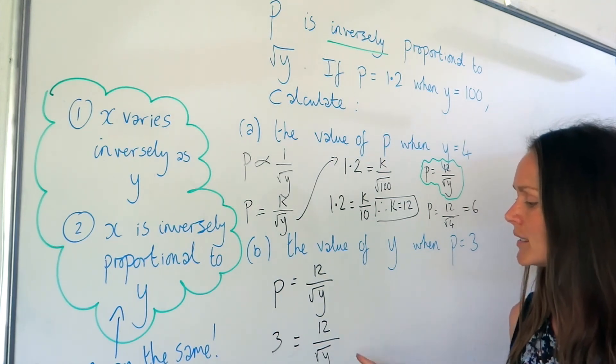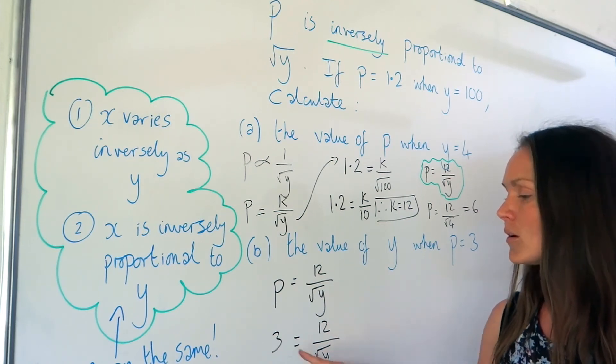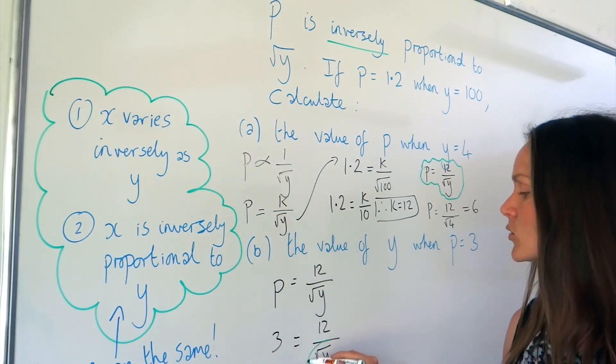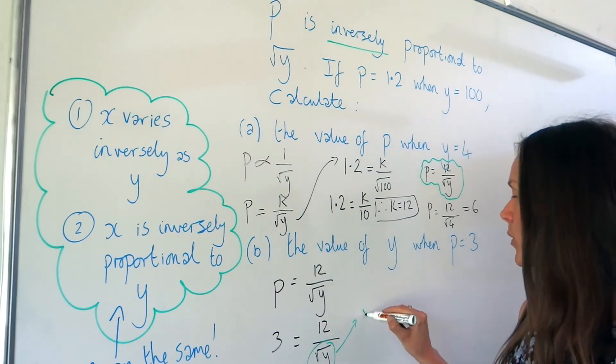So I need to work out the value of Y. I know that 12 divided by 4 gives me 3. So this denominator must be equal to 4. So I'm going to put the square root of Y equal to 4.